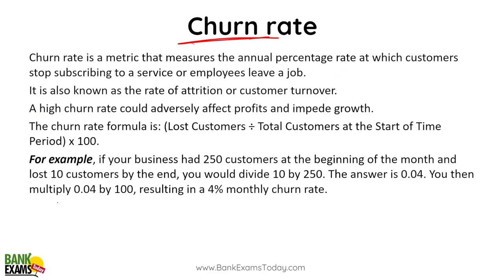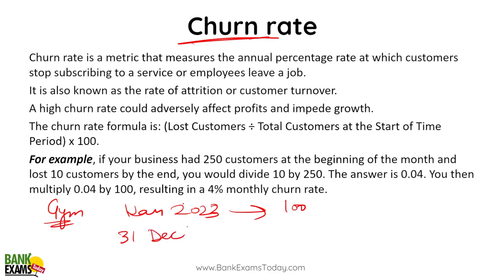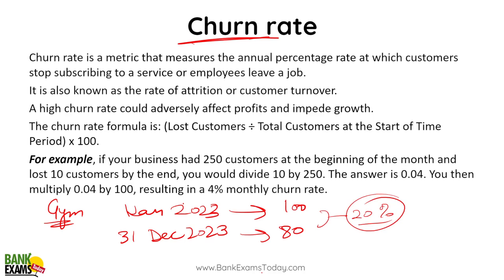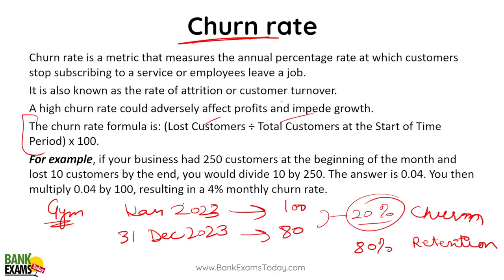Now let's understand churn rate — an important concept that will keep coming up. Assume that a gym had 100 clients on January 1st, 2023. By December 31st, with no new members added, only 80 people remain. So 20 people left — that is 20% of gym members stopped paying for services. Therefore, 20% is your churn rate (also called attrition rate) and 80% is your retention rate. The formula is: lost customers divided by total customers at the start of the period, multiplied by 100.